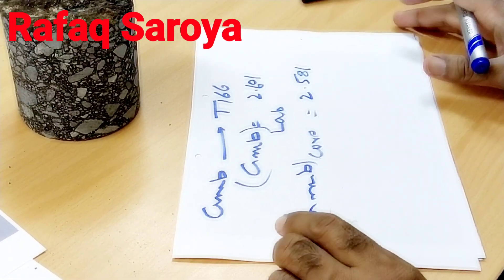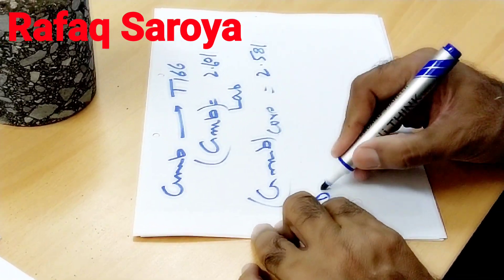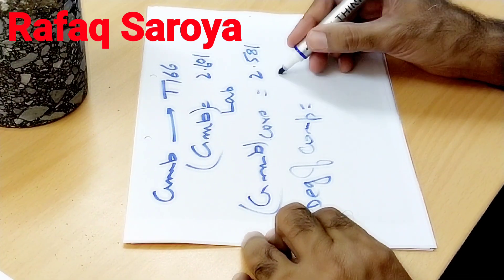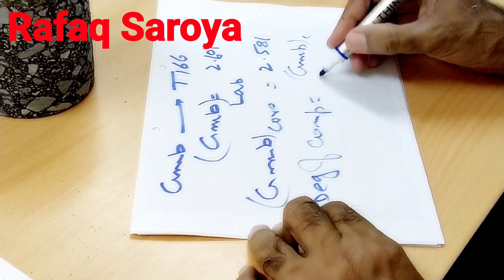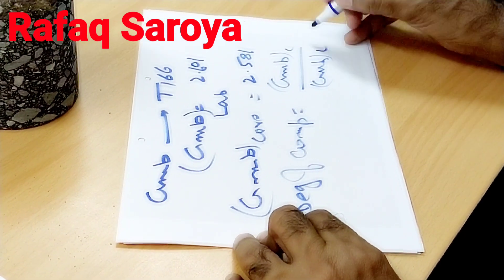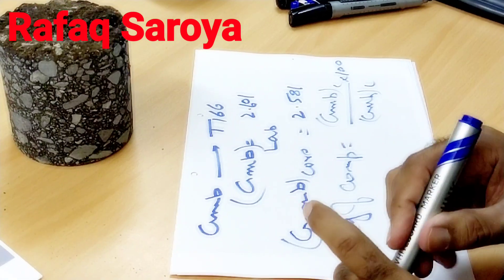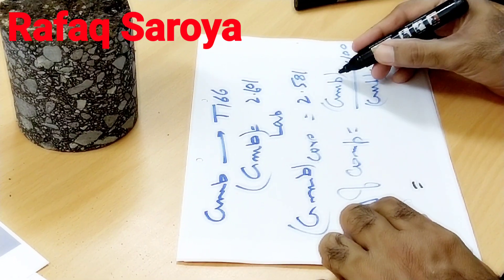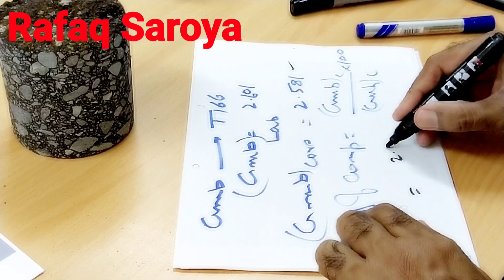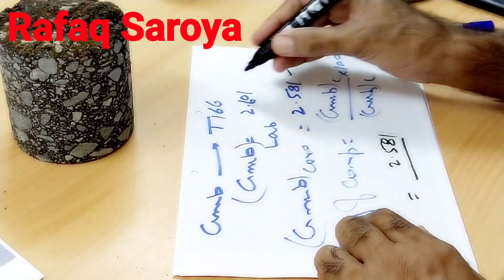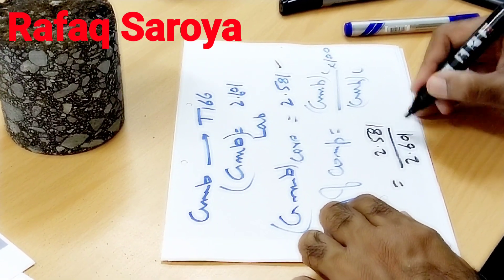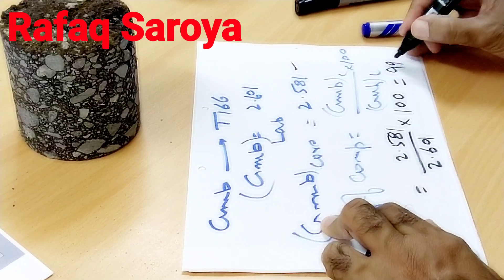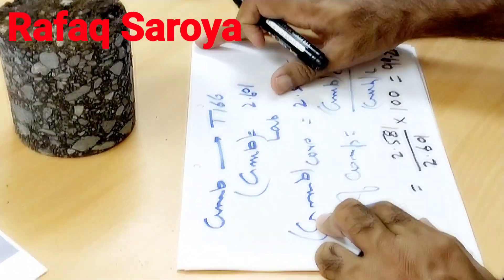Now, what does the standard say about how to find the degree of compaction? The formula is: GMB of core divided by GMB of lab, multiplied by 100. Taking these two values — 2.581 for the core and 2.601 for the lab — when I calculate this, the value comes out to be 99.2 percent.